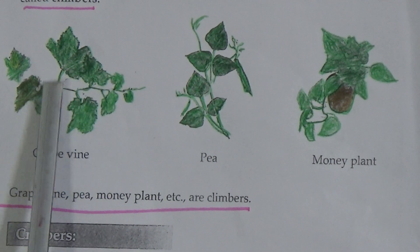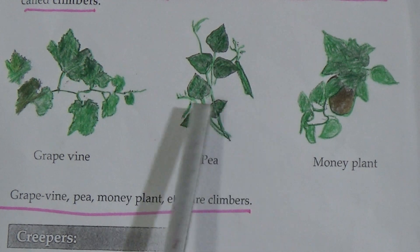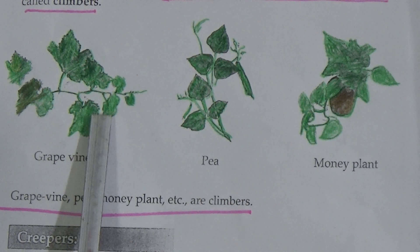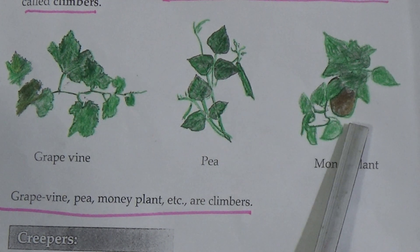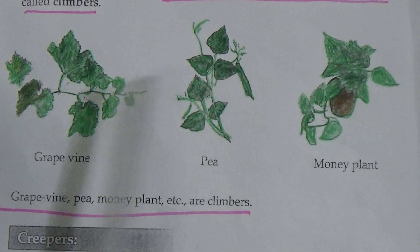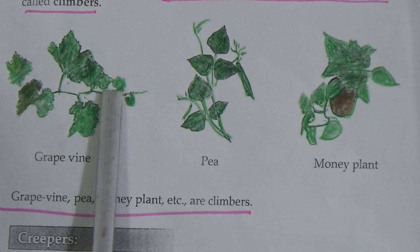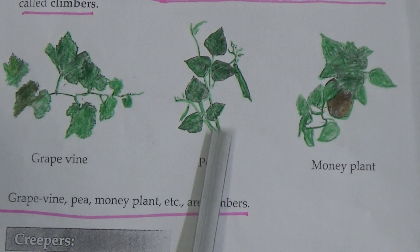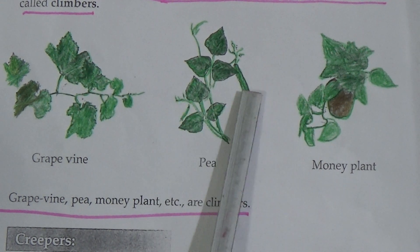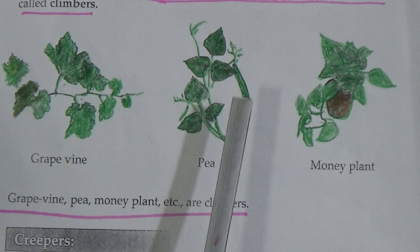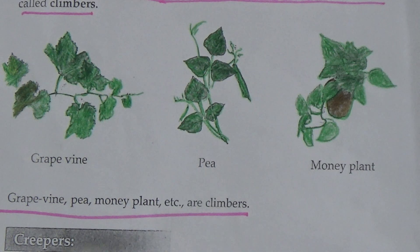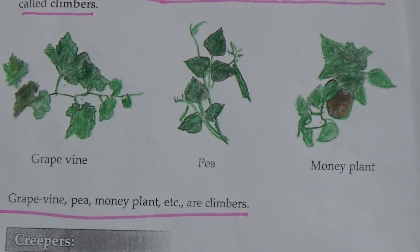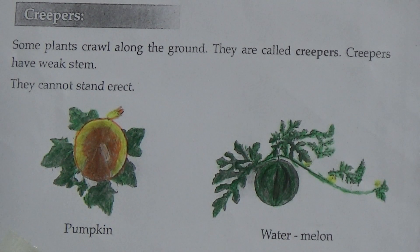See this figure — here are three examples of climbers: grapevine, pea, and money plant. All these plants are climbers, meaning they cannot stand erect on their own; they need the support of another plant or sticks to stand. That is why they are called climbers.